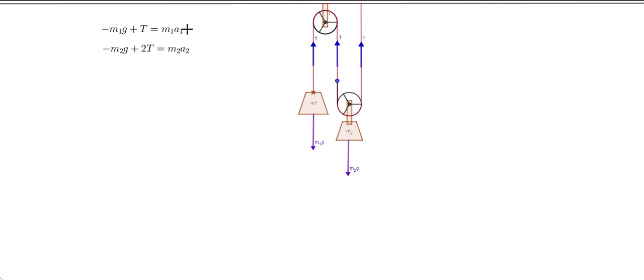Now, what is the relationship between a1 and a2? In other questions with multiple objects, the accelerations are often the same — but can we say that here? The direction relationship is straightforward: if M1 falls down, M2 moves up, and vice versa. So the signs of a1 and a2 must be opposite. But what about their magnitudes — is it one-to-one, or something else? Does it depend on the masses?